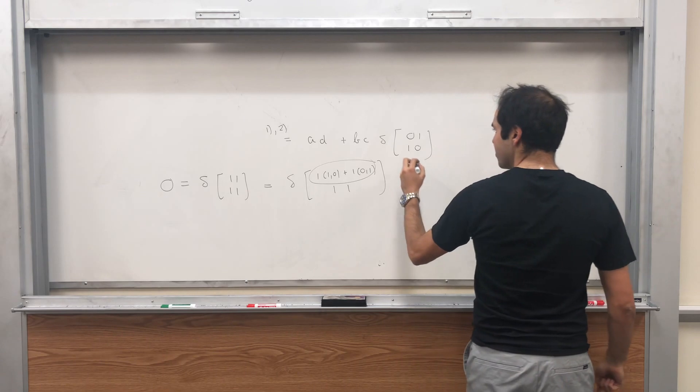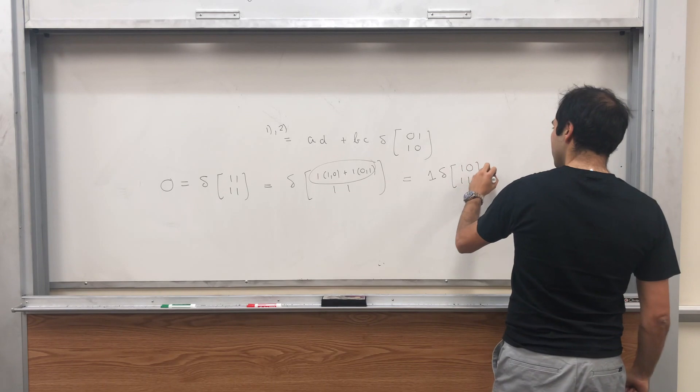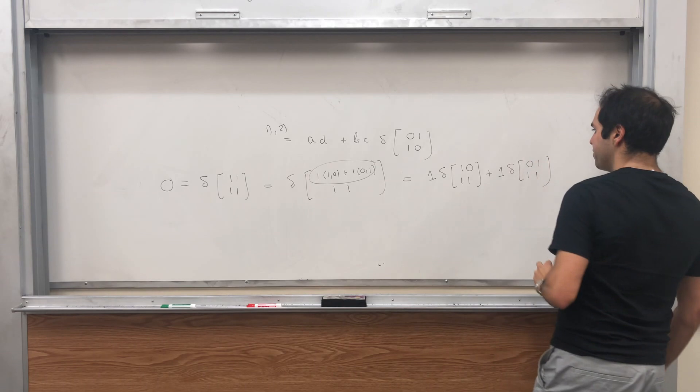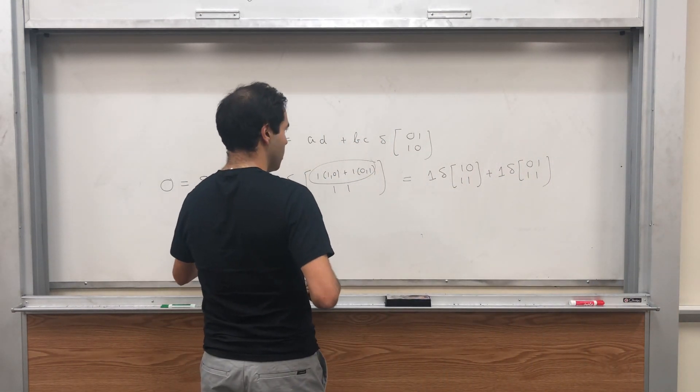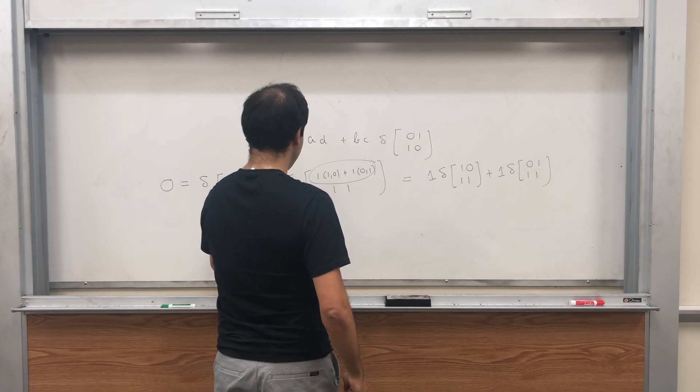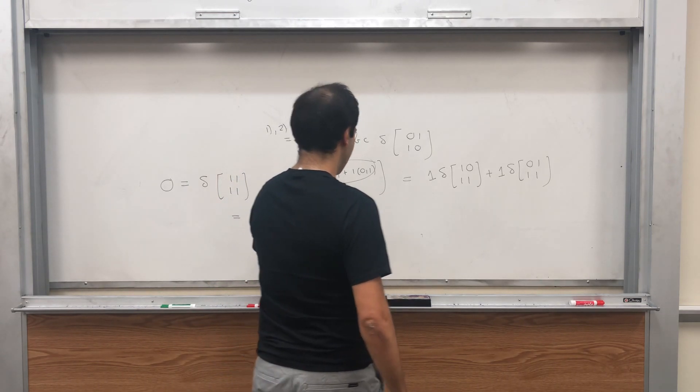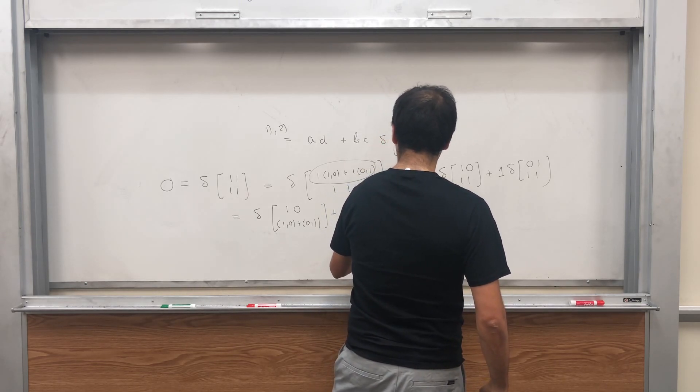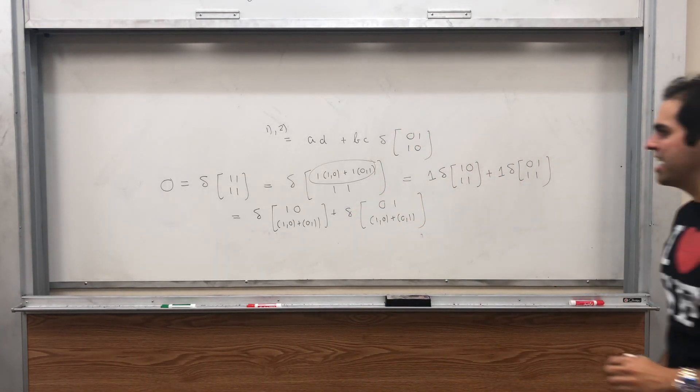By linearity, this is 1 times delta of 1, 0, 1, 1 plus 1 times delta of 0, 1, 1, 1. That is delta of 1, 0 and then 1 times 1, 0 plus 1 times 0, 1, plus delta of 0, 1, and then 1, 0 plus 0, 1. Again, use multilinearity.